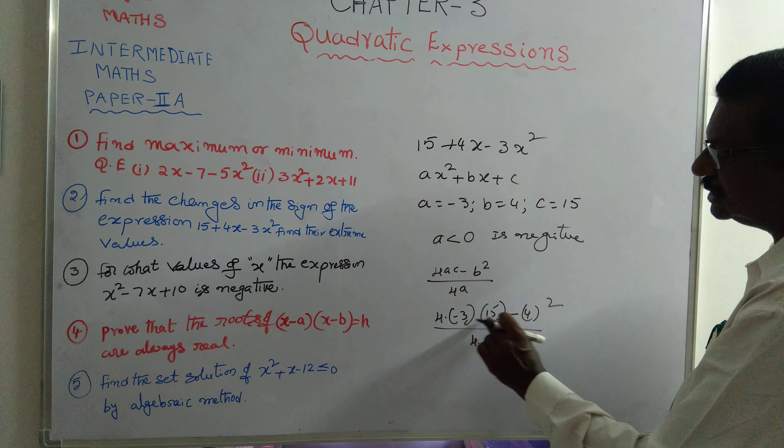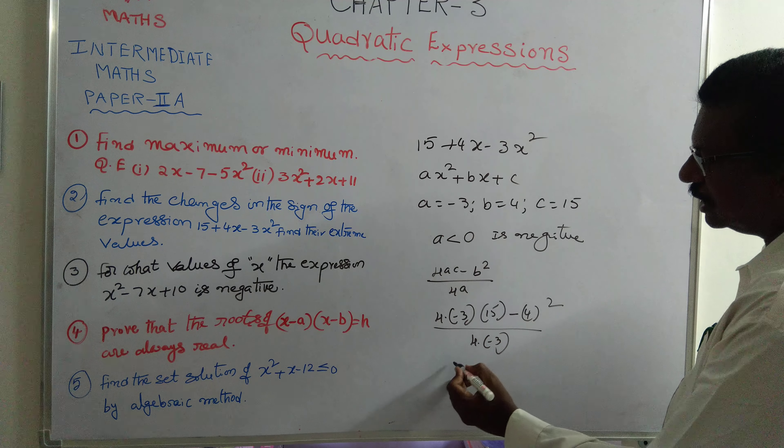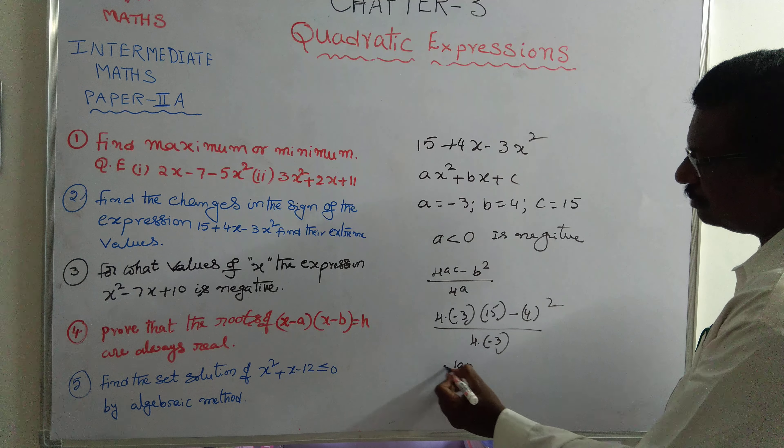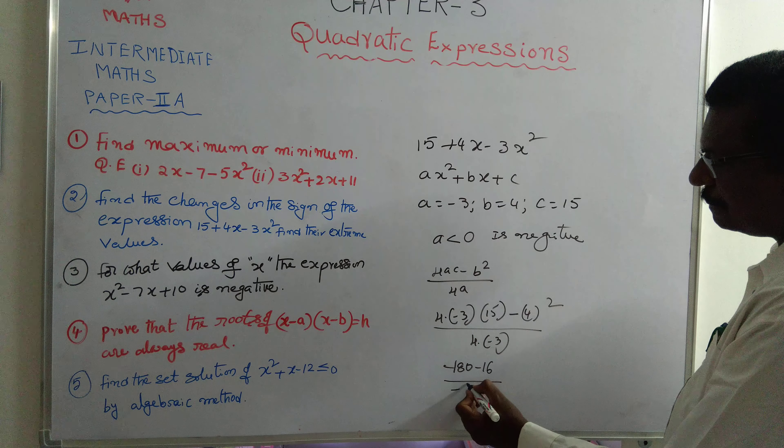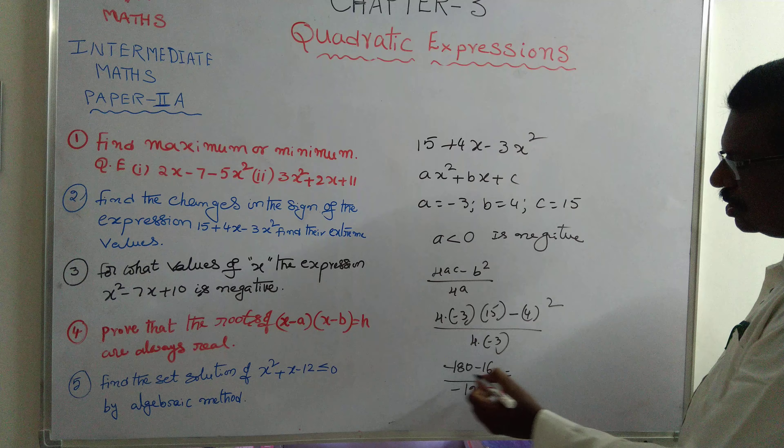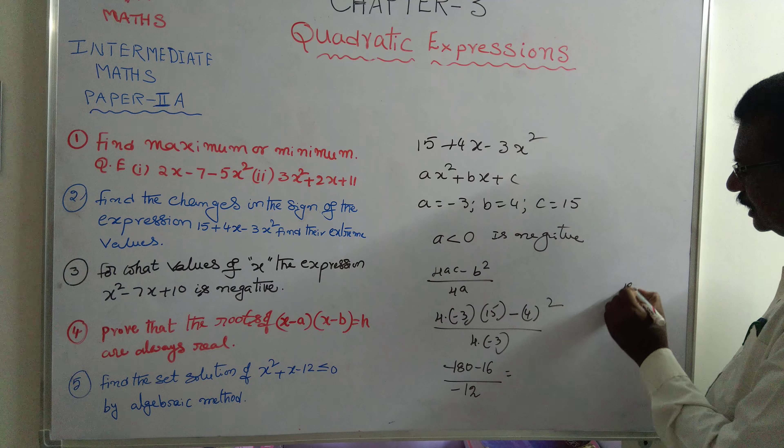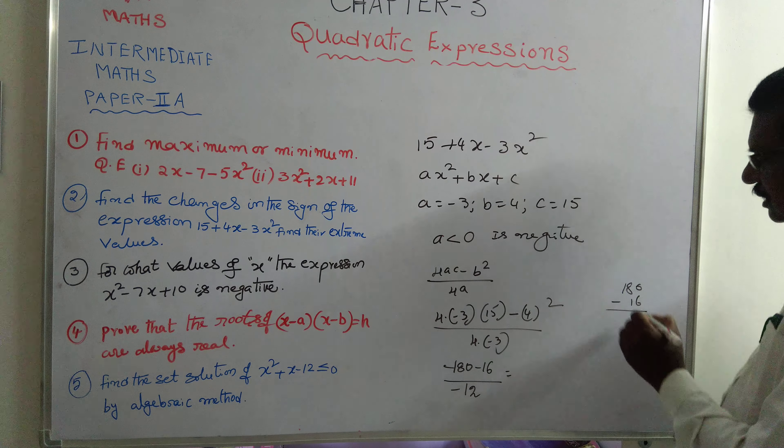4 times 15 is 60, 6 times 3 is 180. 180 with minus, 180 minus 16 by minus 12. Here 180 minus 16, you have to subtract.